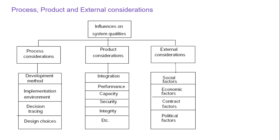Process considerations include the development method, implementation environment, decision tracing, and design choices. Product considerations include integration, performance, capacity, security, and integrity. External considerations include social factors, economic factors, contract factors, and political factors — there can be many more. If you keep these three categories in mind you start thinking about system qualities, and as an architect and influencer of that system you can address them through process, product, and external considerations.